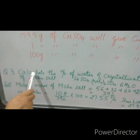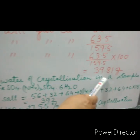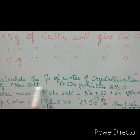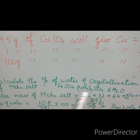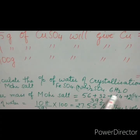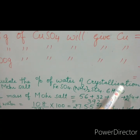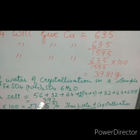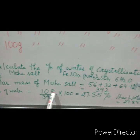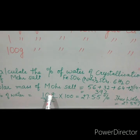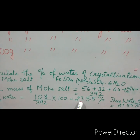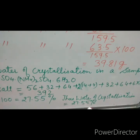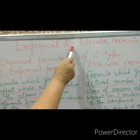Next question: calculate the percentage of water of crystallization in a sample of Mohr's salt. Mohr's salt is a double salt with six water molecules as water of crystallization. The molar mass of Mohr's salt works out to be 392 grams. The percentage of water is 108 (total mass of water) divided by 392 × 100, which comes out to be 27.55%.